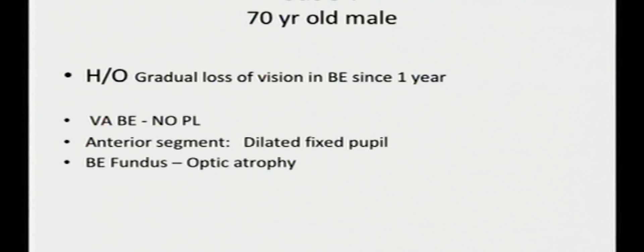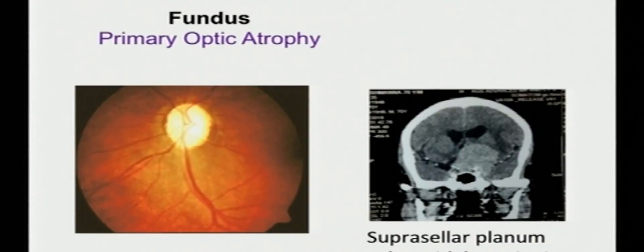This patient had a gradual loss of vision in both eyes, one year duration, no PL vision, dilated fixed pupil. He had a significant cataract. Many times when the patient comes to the OPD, elderly patient comes with significant cataract, we tend to miss the fundus examination because media is hazy. We don't look at the fundus properly and after the cataract surgery, vision will not improve. That time, we'll do the imaging and finally we'll see an occipital infarct or an intracranial space occupying lesion. In this patient, he had primary optic atrophy and the underlying pathology was a suprasellar planum sphenoidale meningioma.